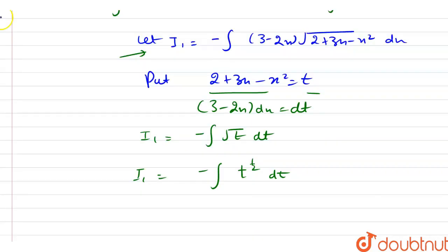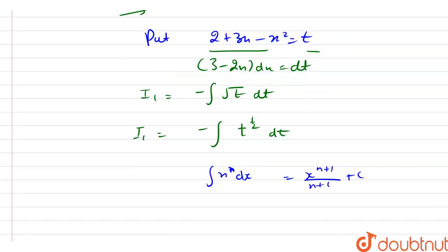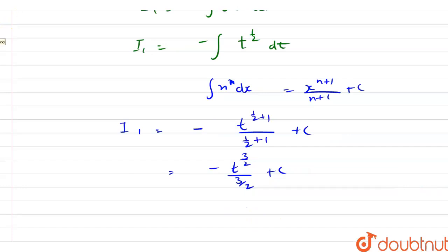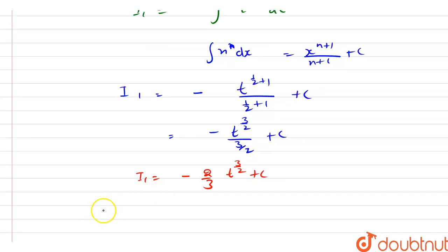As we know the integration of x raised to power n dx equals x raised to power n plus 1 divided by n plus 1 plus c. Using this formula, I1 equals minus of t raised to power (1/2 plus 1) divided by (1/2 plus 1) plus c, which equals minus t raised to power 3/2 divided by 3/2 plus c. Therefore I1 equals minus 2/3 into t raised to power 3/2 plus c. Substituting back the value of t, I1 equals minus 2/3 into (2 plus 3x minus x square) raised to power 3/2 plus c.